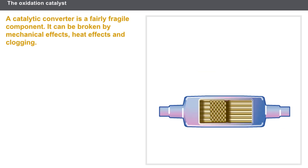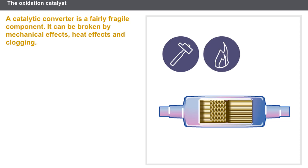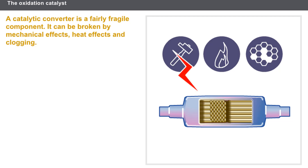A catalytic converter is a fairly fragile component that can be broken by various factors: mechanical effects, thermal effects, and clogging. Mechanical stresses or heat can rupture the ceramic blocks. The ceramic material may melt due to overheating from too great a quantity of pollutants. The surface in contact with the gases may also be coated in oil, soot, or other products.